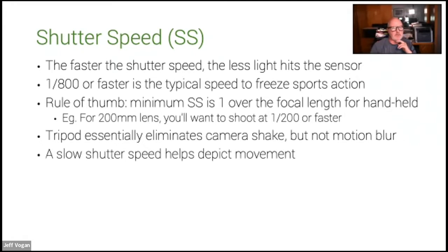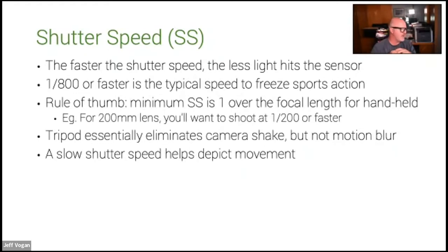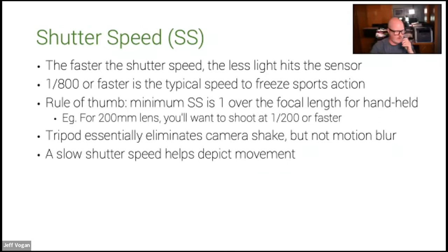A slow shutter speed helps depict movement. For example, taking a picture of a race car — if you shoot at 1/8000th of a second even at 300 km/h, it's going to look like the car is parked with no motion in the wheels. But if you go with a slower shutter speed and pan with the car, you'll get motion blur in the wheels, which is what you want to depict movement.